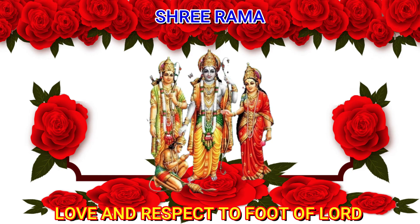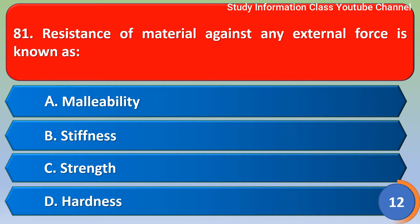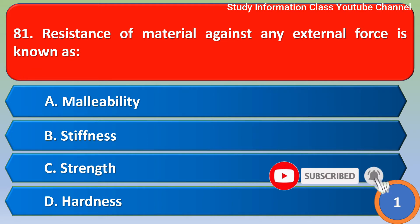Namaste. Resistance of material against any external force is known as: option A malleability, option B stiffness, option C strength, option D hardness. The correct answer is option C, strength.